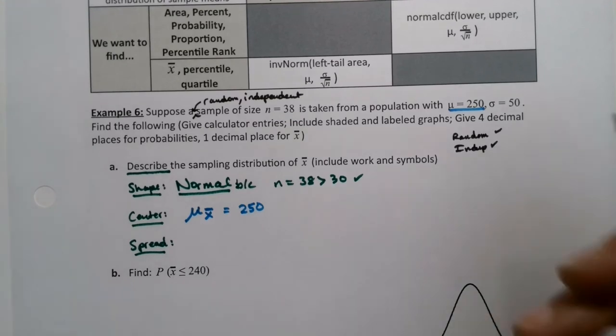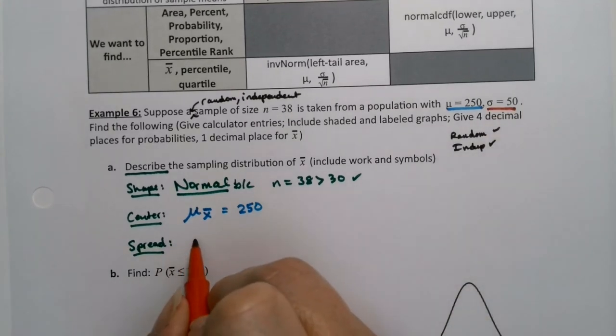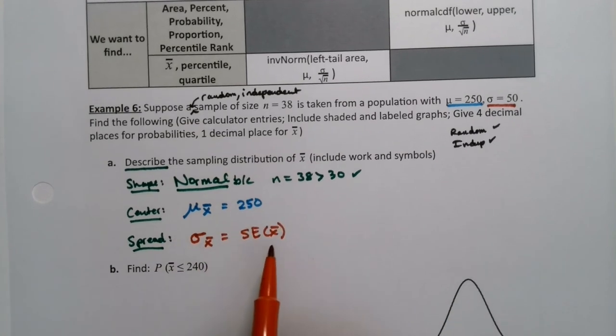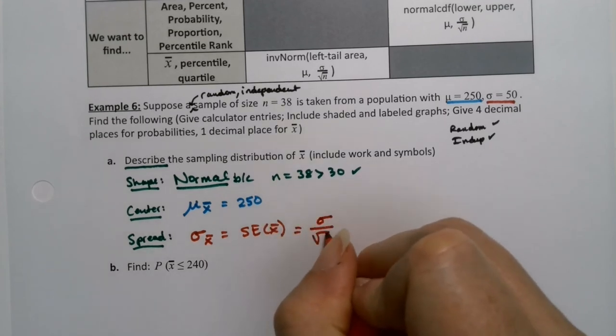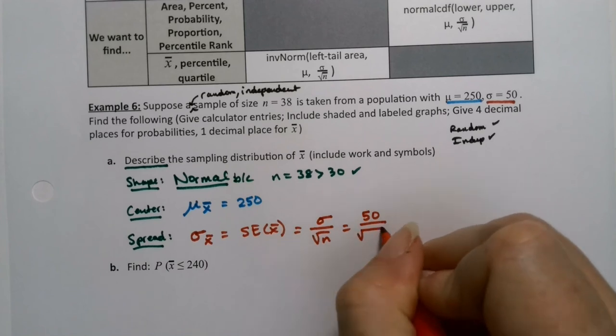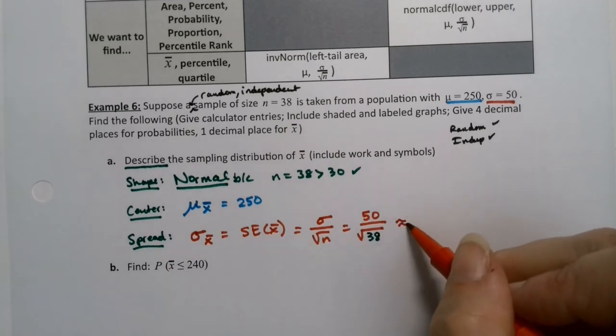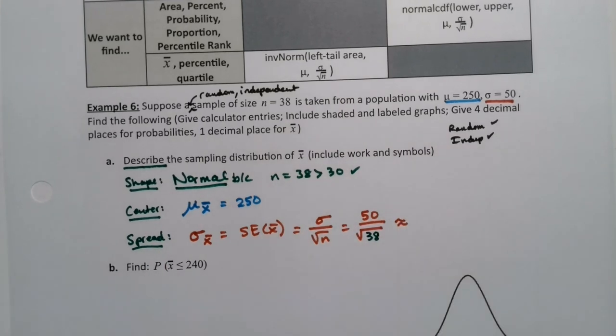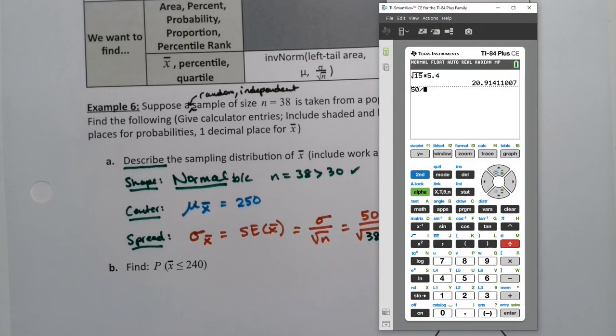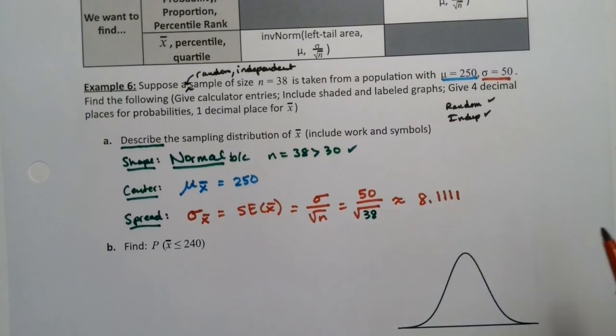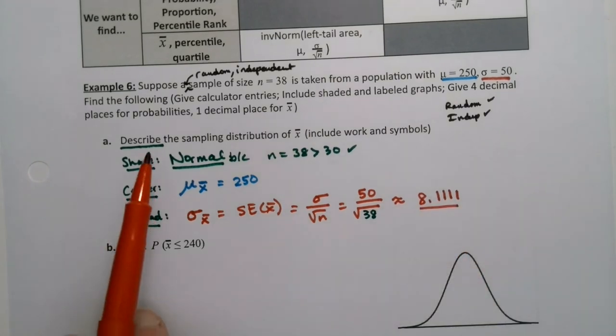Now the standard error, the spread will be σ sub x-bar. It's not σ. It's the standard error of the x-bars. It's the σ on those x-bar distributions, which is σ over the square root of n, which is 50 divided by the square root of 38, because my sample size was 38. If I find a decimal approximation, it won't be as accurate because I will lose accuracy in the rounding. So 8.111 seems reasonable. Technically, it's 1111 because the 7 would round the 0. So there you have it: shape, center, and spread.